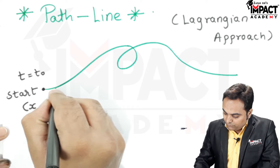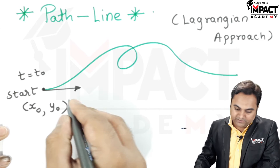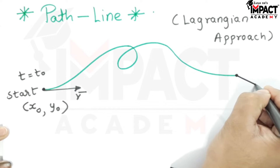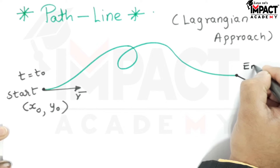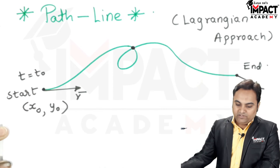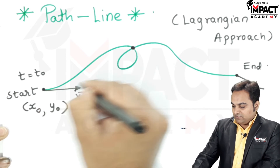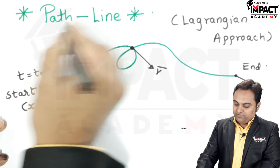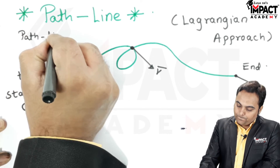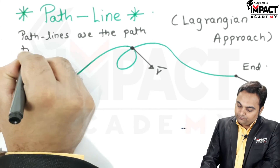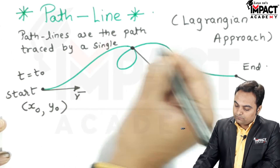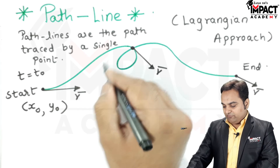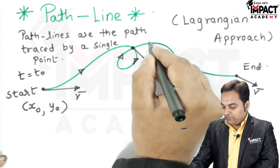We can get the velocity at different points by drawing tangents at those points, indicating the velocity vector v. Even at intersection points where path lines cross one another, we can obtain the velocity. Path lines represent the path traced by a single point as it flows, and the flow can even intersect as seen here.